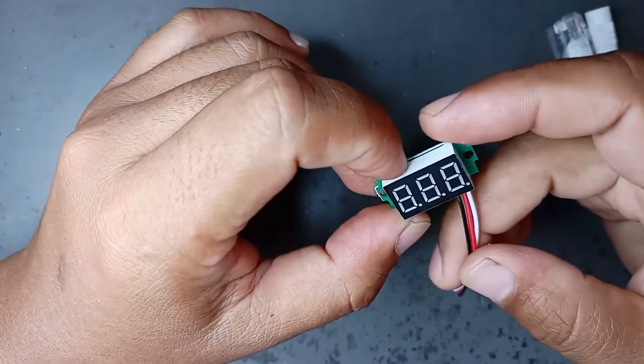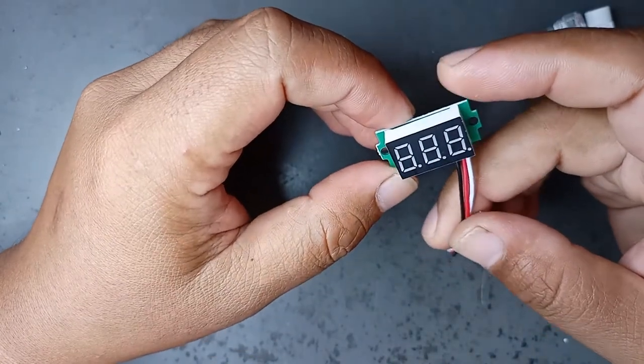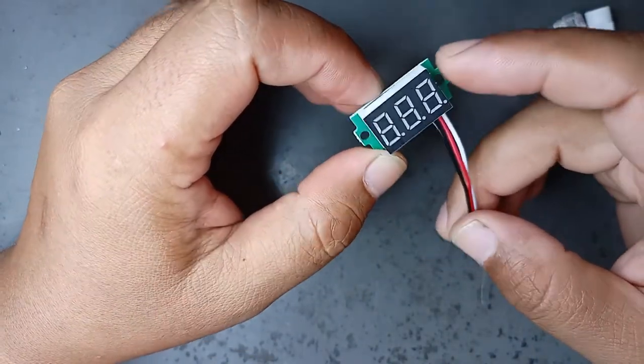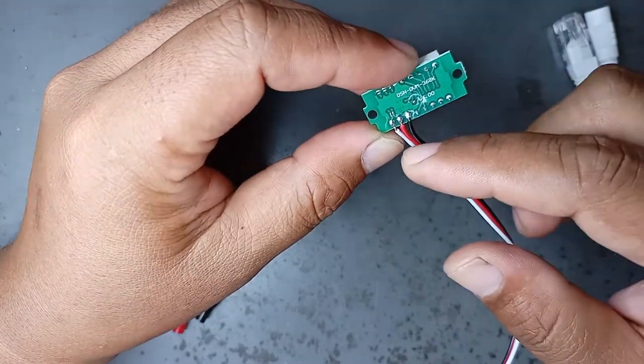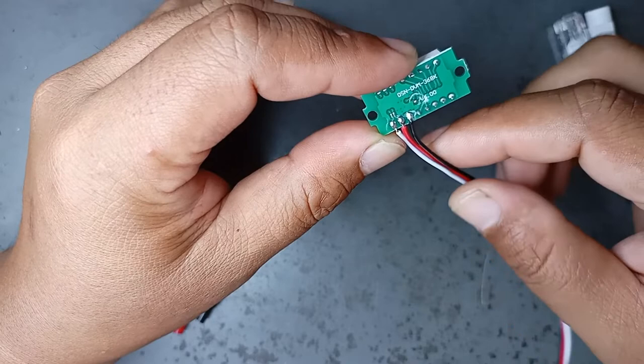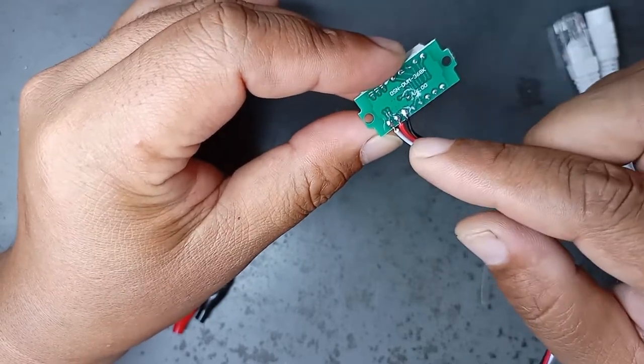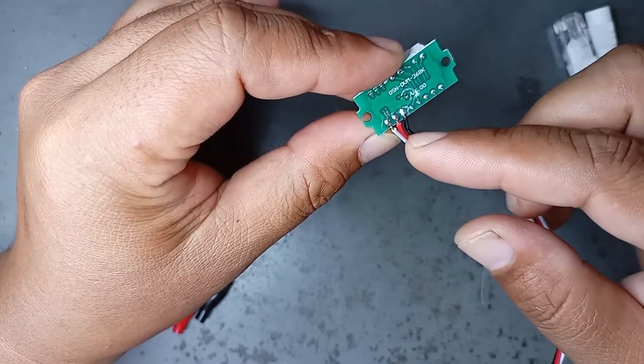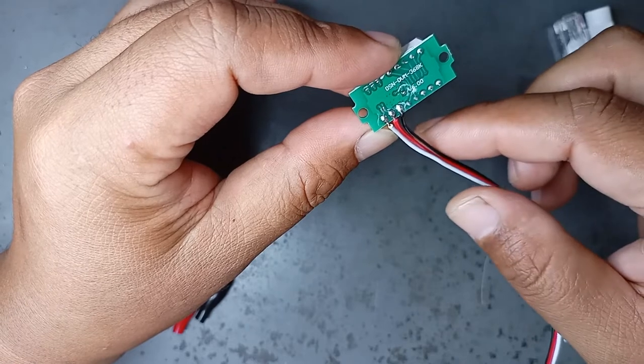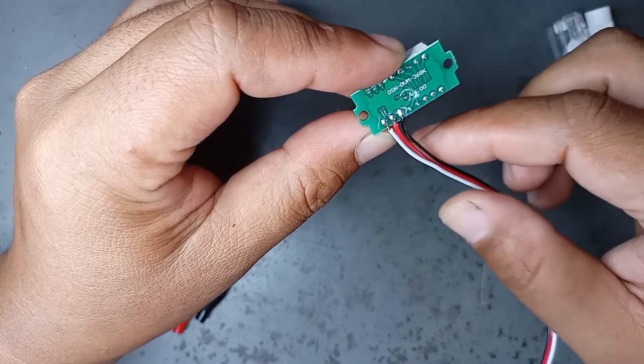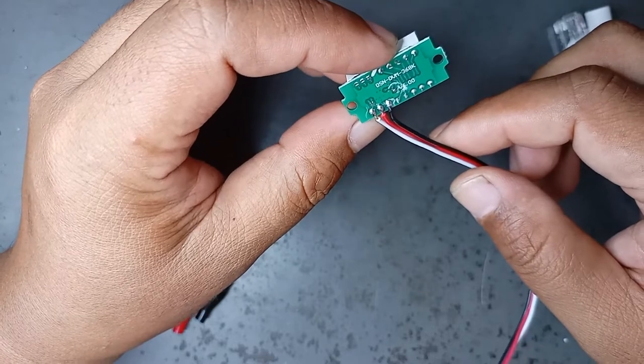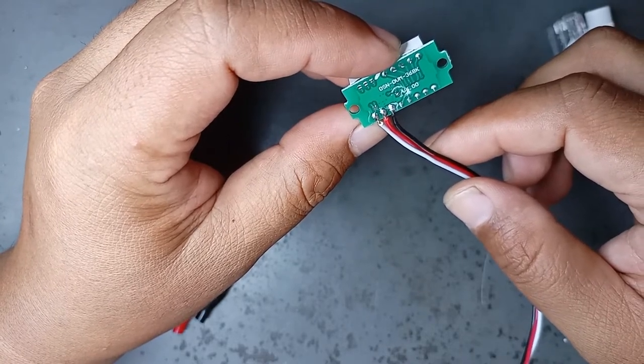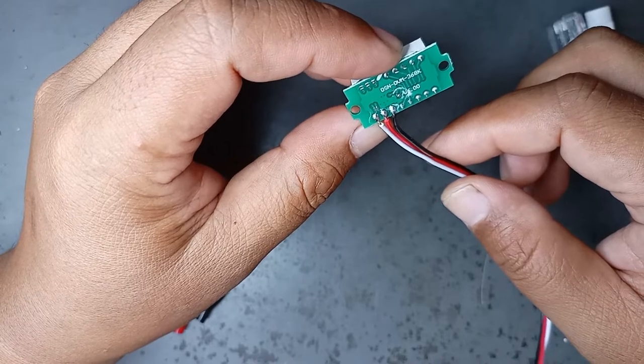So if we use 2-wire mode, the maximum we can measure is 30V only. That's the specification of this voltmeter. We'll assemble it with 2-wire mode.